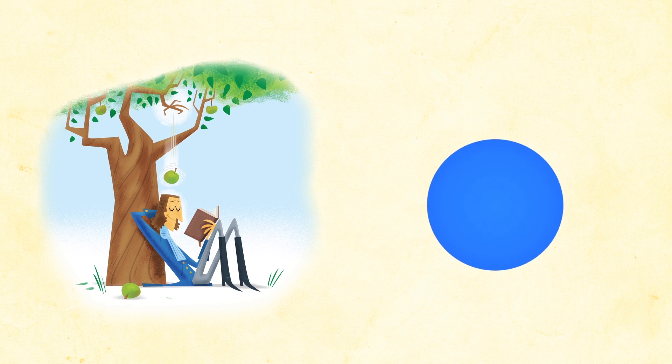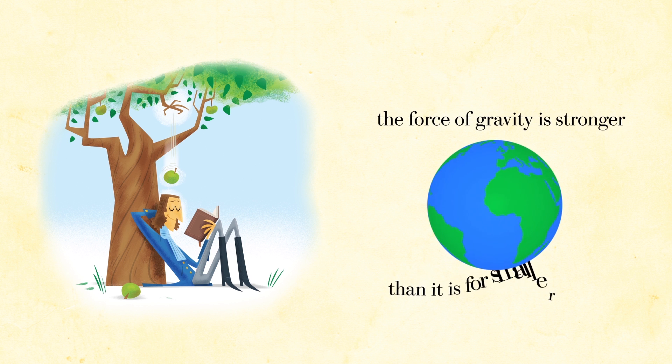Newton explained that for very big objects such as our planet, the force of gravity is stronger than it is for smaller objects such as a baseball.